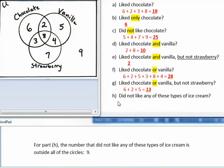For part H, the number that did not like any of these types of ice cream would be outside of all the circles. So, 9.